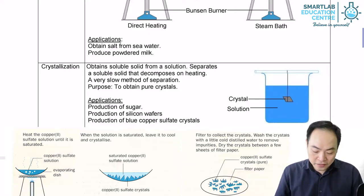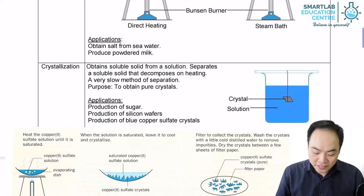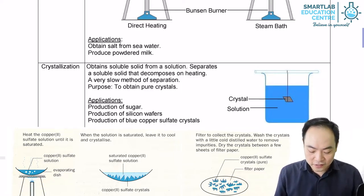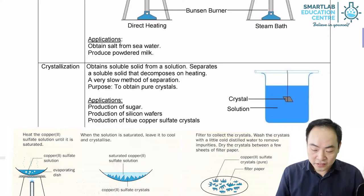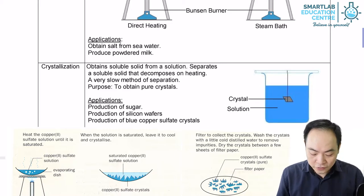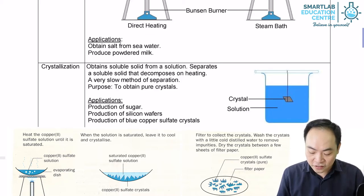A more suitable method to use is crystallization. In this process, we do not heat the solution until totally dry. Instead, the solution is heated to boil off most of the water. Through this, a hot and saturated solution is obtained. A saturated solution is a solution that contains the maximum amount of the dissolved solute at a given temperature.